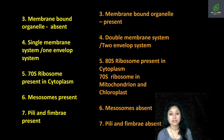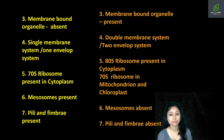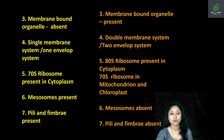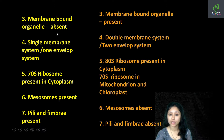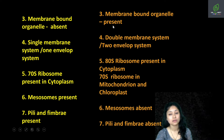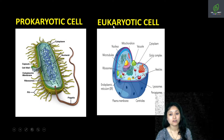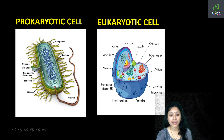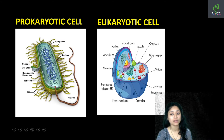Next, inside the cell membrane is the cytoplasm, and within the cytoplasm are membrane-bound organelles. These membrane-bound organelles are absent in prokaryotic cells but present in eukaryotic cells. For example: membrane-bound Golgi complex, endoplasmic reticulum, lysosomes, vacuoles, mitochondria, and if it is a plant cell, chloroplasts.